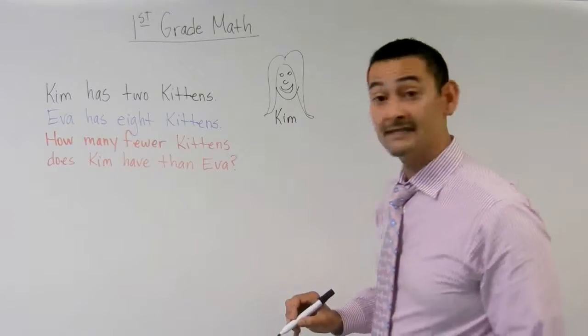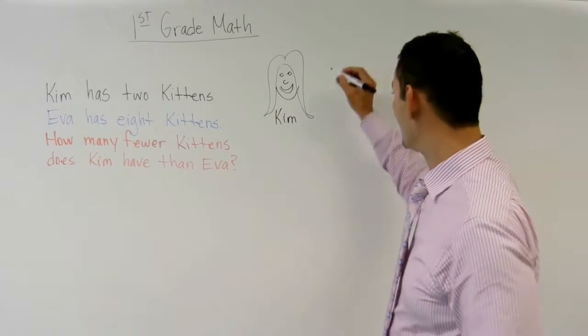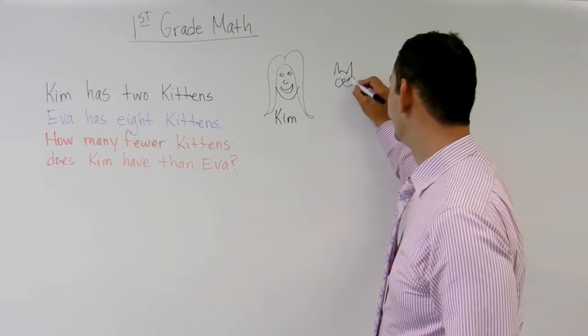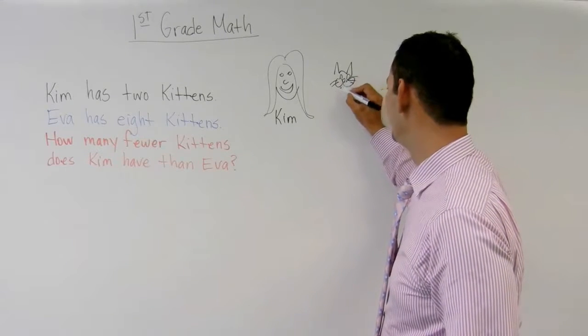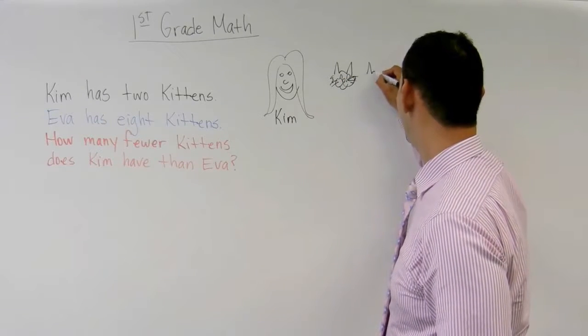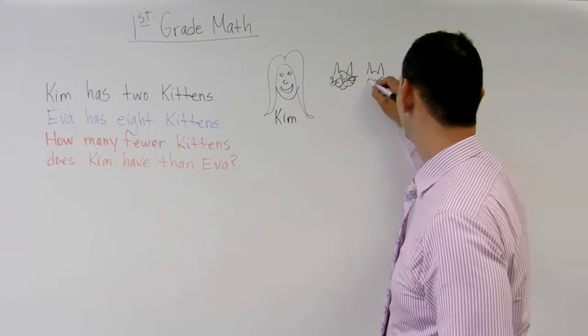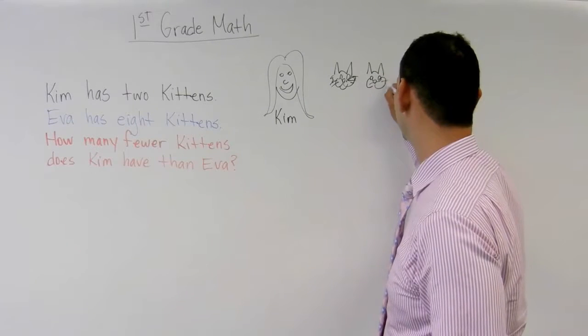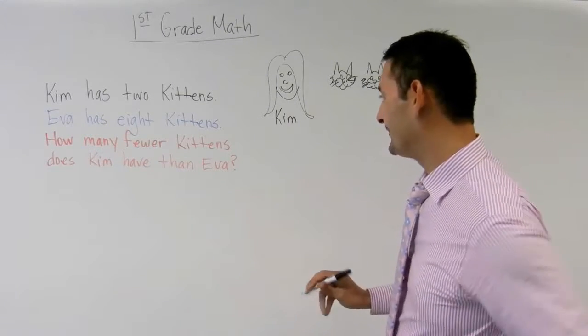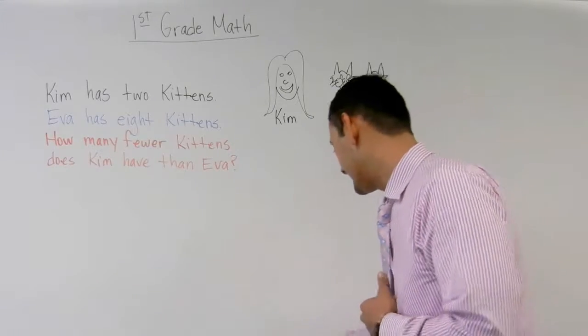Kim has how many kittens? She's got two, right? So I'm going to draw, and I'm sorry about the pictures, I'm doing the best I can. So she's got one kitten and let's take a look at our next kitten. So she's got two kittens. Now let's take a look at the next piece.